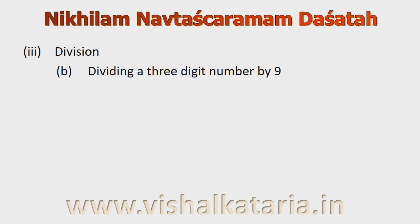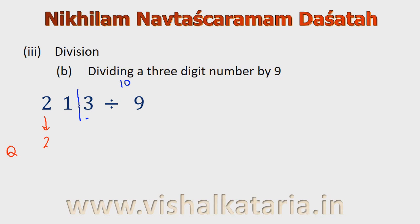Let's discuss how to divide a 3-digit number by 9. We have the number 213. The base is 10, so I will put a bar here. The right-hand side gives the remainder and the left-hand side gives the quotient. The quotient is 2, and the next digit will be equal to 2 plus 1, which is 3. The remainder will be equal to the cumulative sum 2 plus 1 plus 3, which is equal to 6.